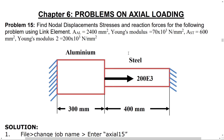It is a step bar made up of two different materials, aluminum and steel. The aluminum bar has a cross-sectional area of 2400 mm² and modulus of elasticity equal to 70×10³ N/mm². The steel bar has a cross-sectional area of 600 mm² and modulus of elasticity equal to 2×10⁵ N/mm². We need to find nodal displacements and stresses on different elements.